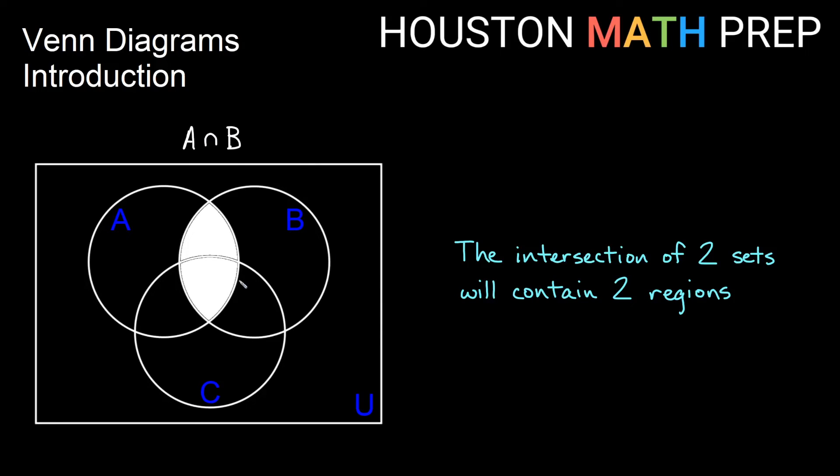Here we have our A intersect B. It looks much like it did before when we had the two-circle Venn diagram. But we have two regions here because now we have circle C sort of cutting through that middle section there. You can see a similar thing happens with A intersect C.